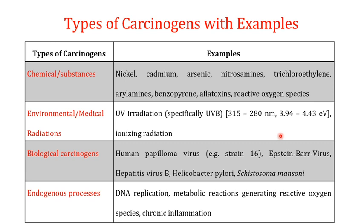There are different types of carcinogens, and in this table I'm showing you the different types with examples. The first type is chemicals or substances, for example: nickel, cadmium, arsenic, nitrosamides, trichloroethylene, arylamines, benzopyrene, aflatoxins, and reactive oxygen species. These are the examples of carcinogens under the heading of chemicals or substances.